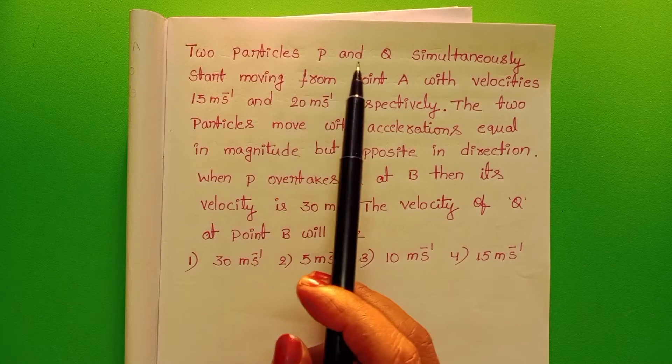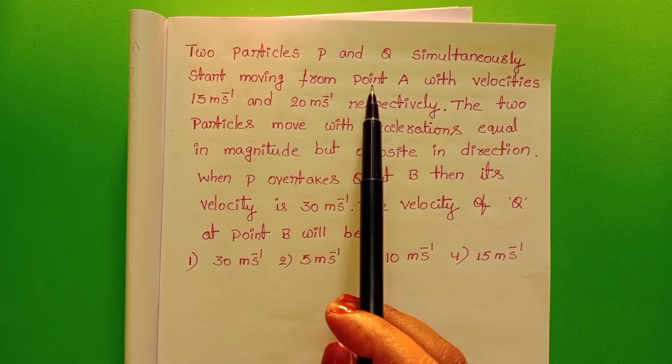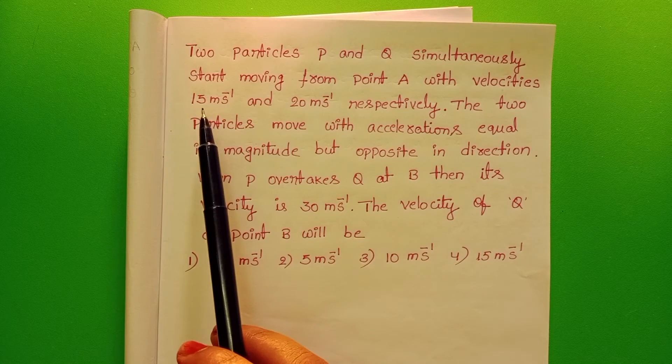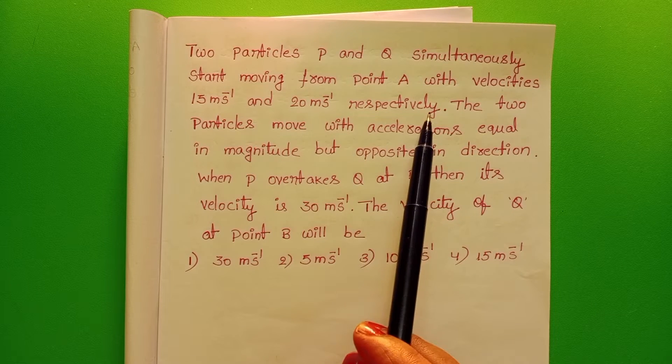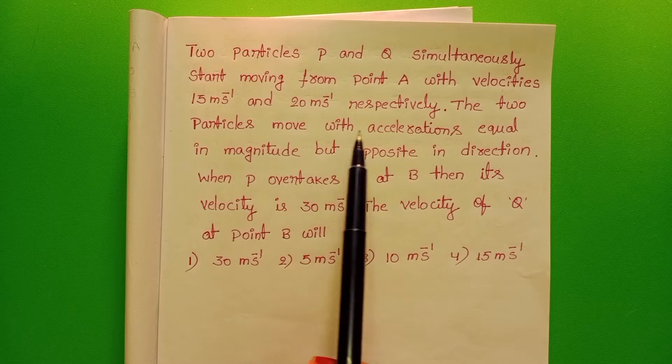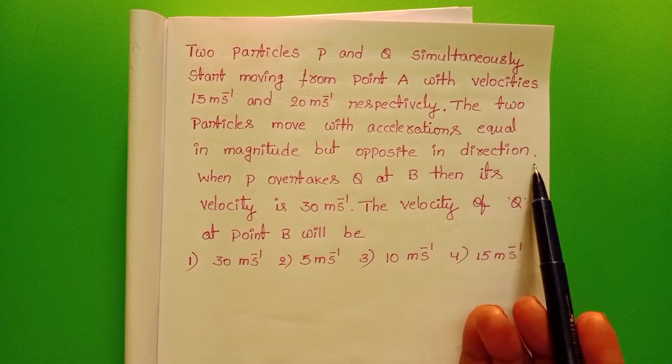Two particles P and Q simultaneously start moving from point A with velocities 15 m per second and 20 m per second respectively. The two particles move with accelerations equal in magnitude but opposite in direction.